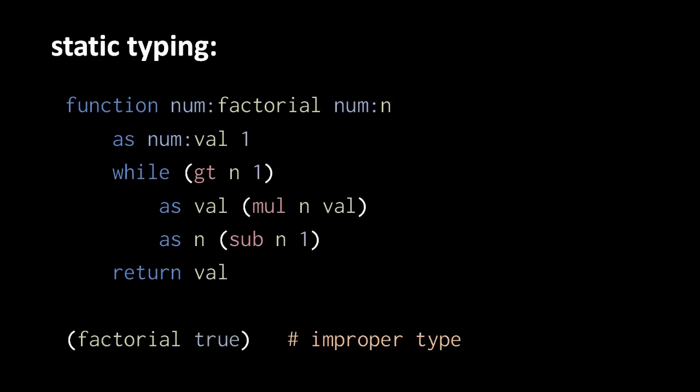So here the factorial function's name is prefixed with num, denoting that the function can only return numbers, the parameter n is also prefixed with num, denoting that only numbers can be passed to n, and the variable val is also prefixed with num in its first assignment, denoting that only numbers can be assigned to val. So now here, a compiler or interpreter can detect the real source of our type error, which is the call to factorial with the boolean value.